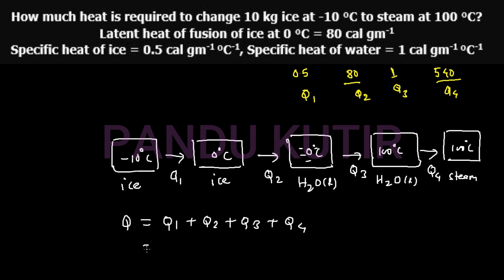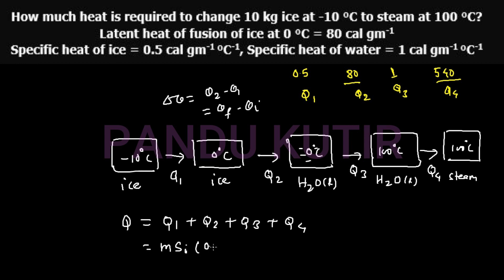Q1: mass of ice multiplied by specific heat capacity of ice, multiplied by the change in temperature ΔT. ΔT equals theta-final minus theta-initial, which is 0 minus (minus 10) equals plus 10 degrees.